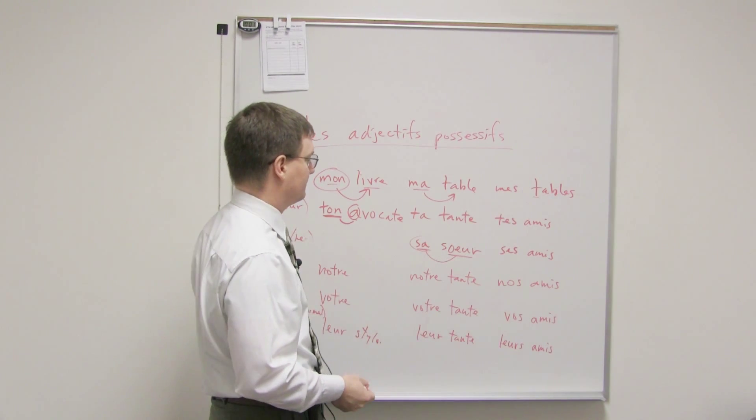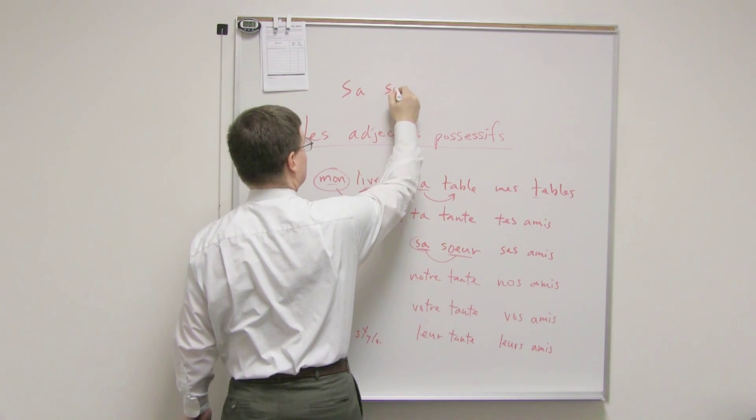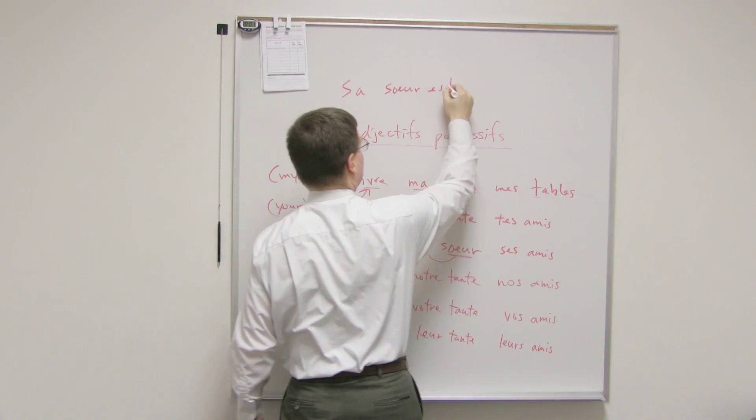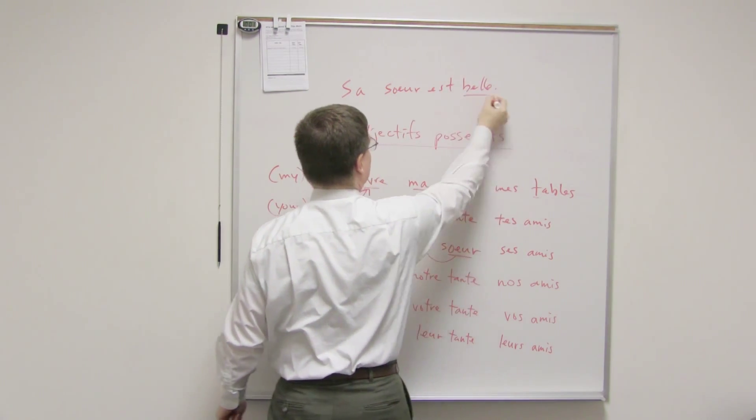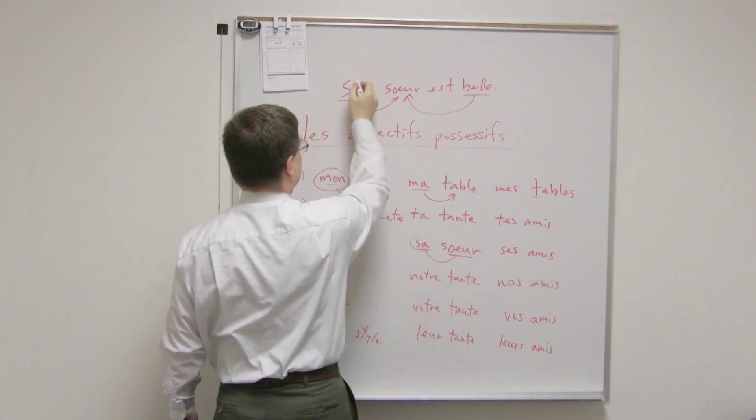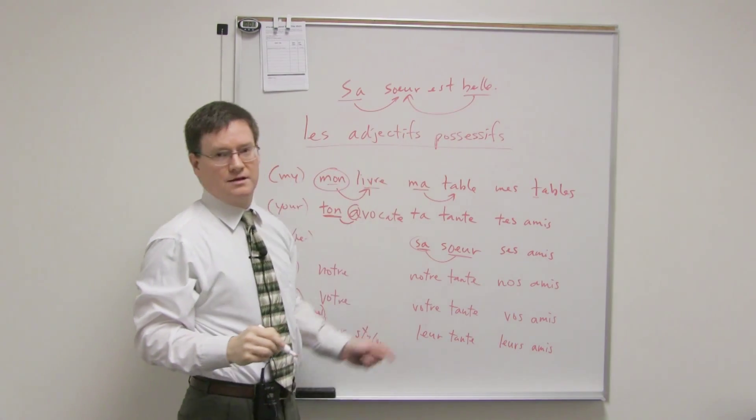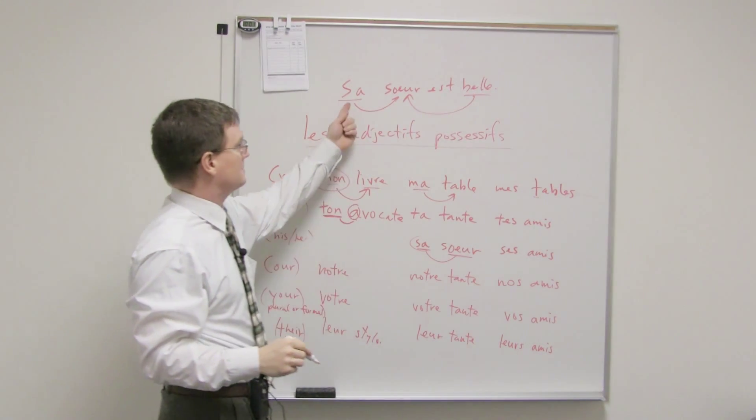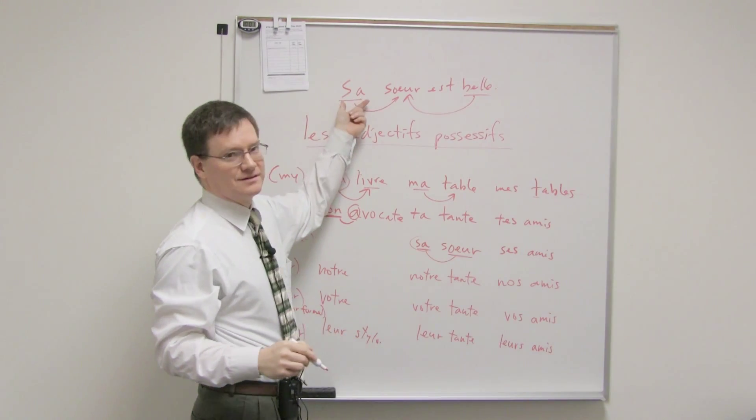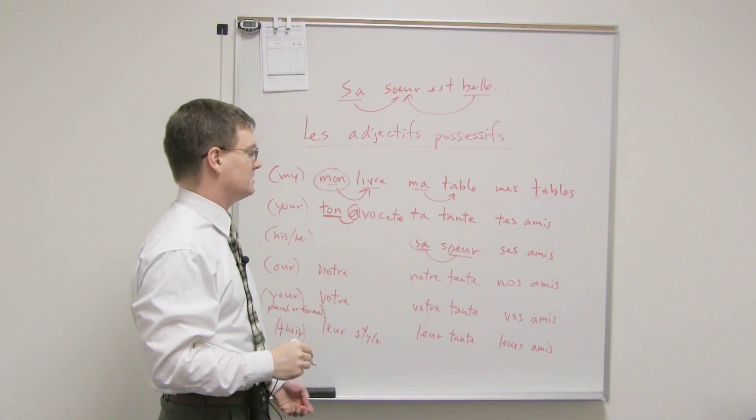So, sa soeur est très belle. So, for example, if you want to say his sister is beautiful, you'd say sa soeur est belle. So, who's beautiful? The sister. What kind of sister? It's his sister. So, notice, in French, it's the sister that determines these adjectives. And notice, in English, we say his. It's the possessor that determines that adjective. But in French, it's the noun that determines the adjective.